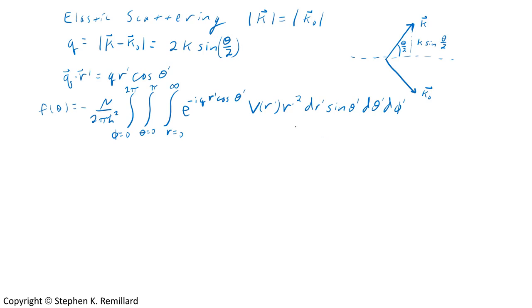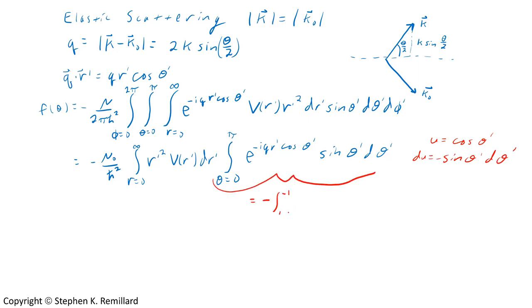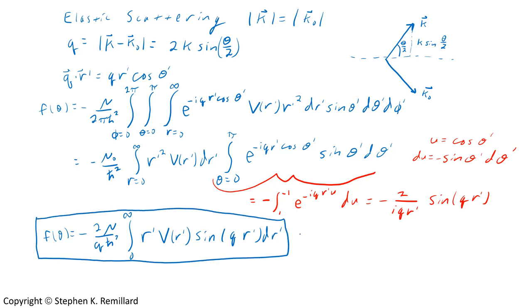There's also the exponential, which has Q dot r prime in it. Q dot r prime is Q times r prime times cosine of the angle between them. We'll call theta prime the angle between Q vector and r prime vector. Now let's rewrite F of theta. The phi integral is just 2 pi, but the theta integral is going to take some work. This can be achieved with a u substitution.